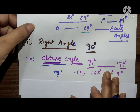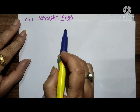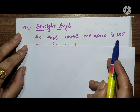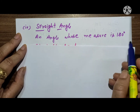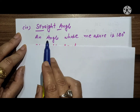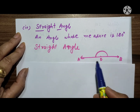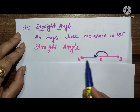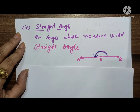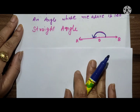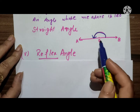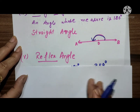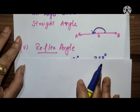Next is the straight angle. An angle whose measure is 180 degrees is called a straight angle — sometimes also called a linear angle.